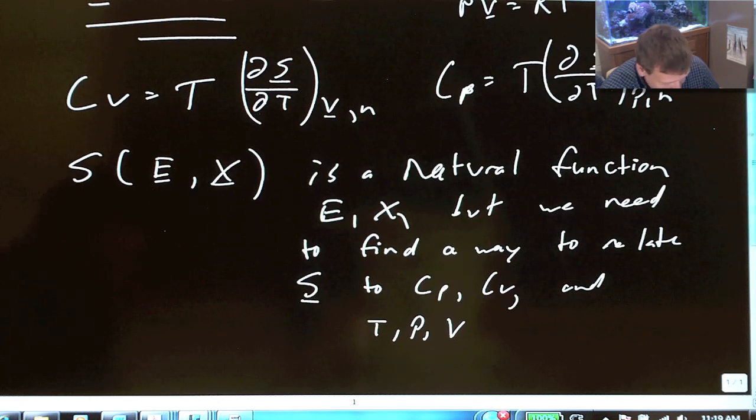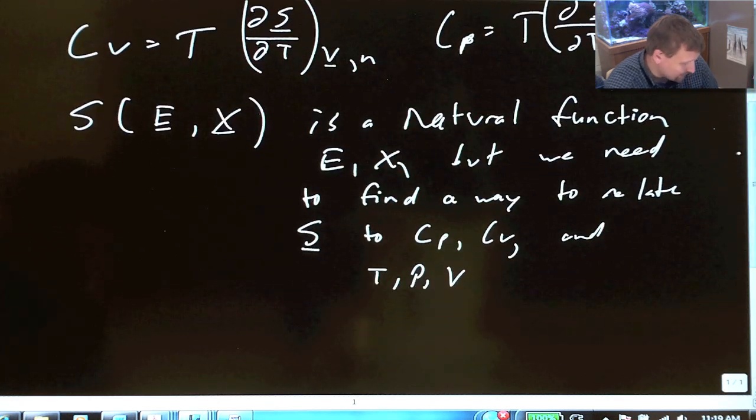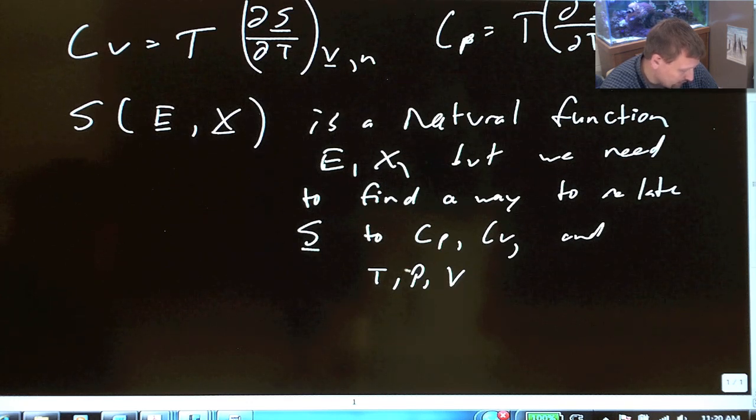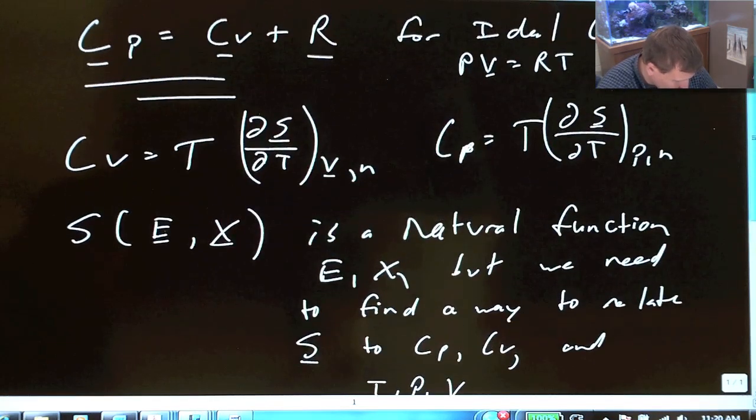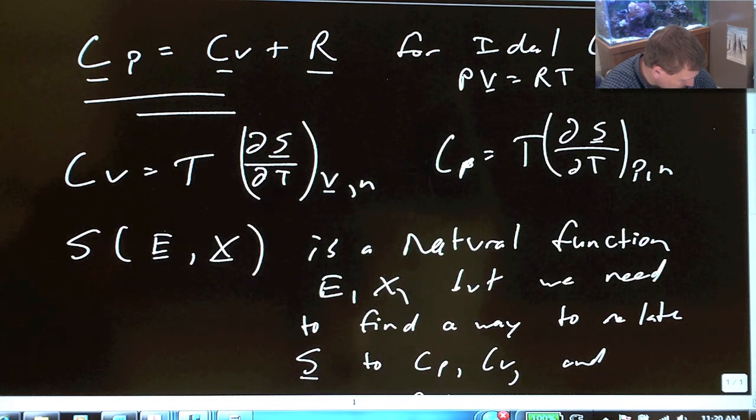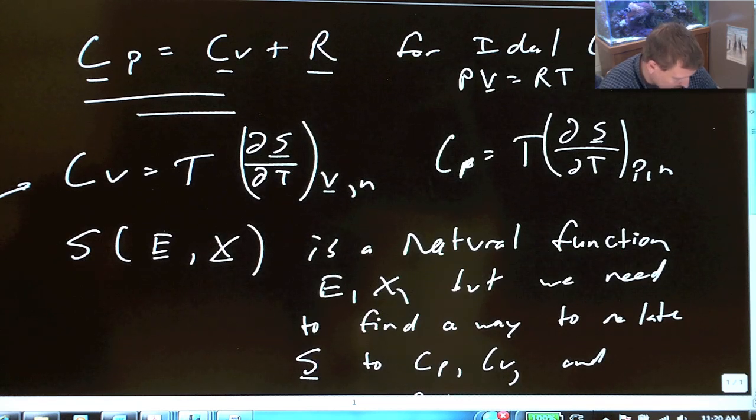But where do we start and where do we go? We start with S, which is a natural function of E and X, where X is the mechanical sense of variables and E is the internal energy of the system. But we need to find a way to relate entropy to Cp, Cv, and in the end, temperature, pressure, and volume. Let's start by looking at what our definitions for Cv and Cp are. We have S, T, and V in combinations, S, T, and P on this side here.